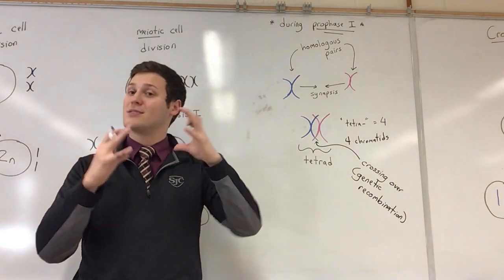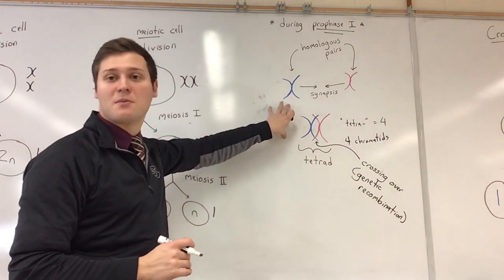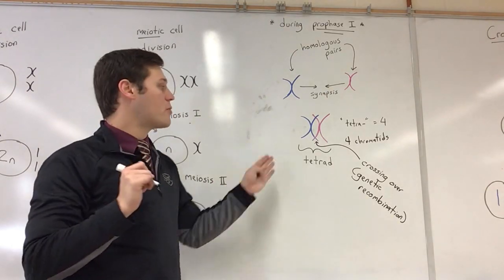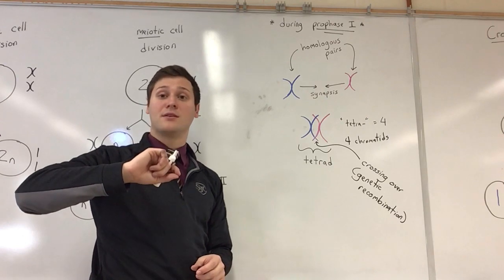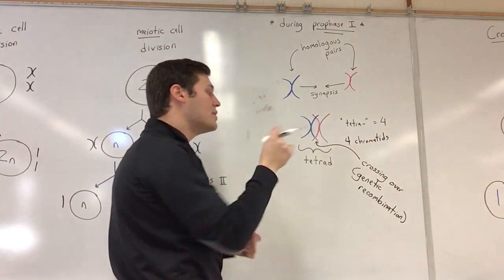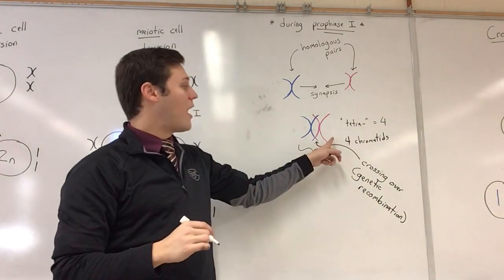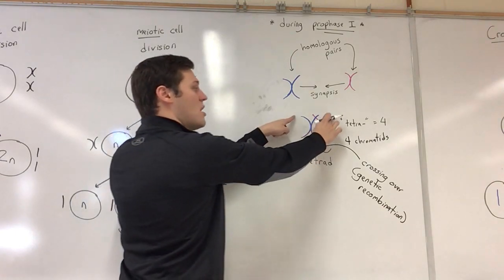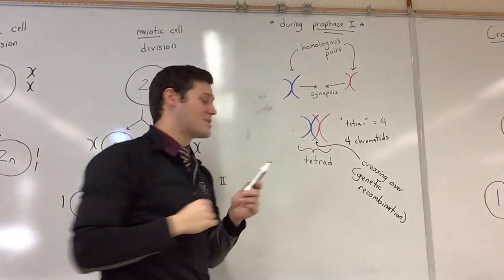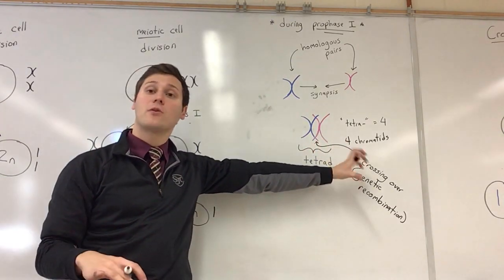Prophase 1 is arguably the most important step of meiosis to remember. After that, if you know mitosis, you can follow it logically — we're just using tetrads instead of individual replicated chromosomes for meiosis 1. One important detail: only the inner chromatids can undergo crossing over. The outer chromatids will stay fully either maternal or paternal. It's very important to know the terms tetrad, synapsis, and crossing over or genetic recombination.